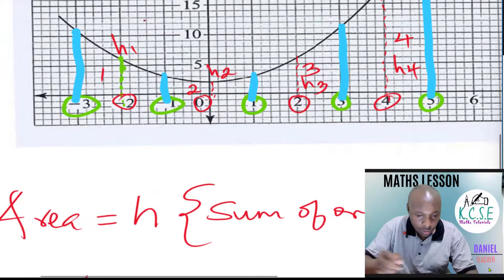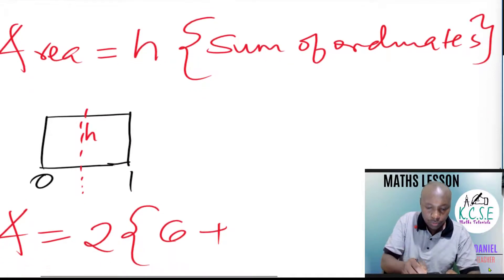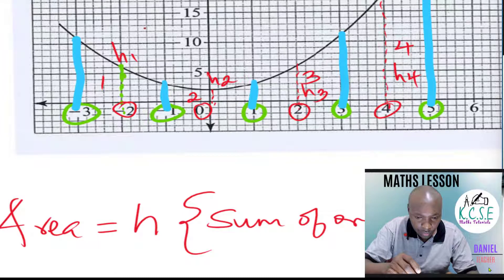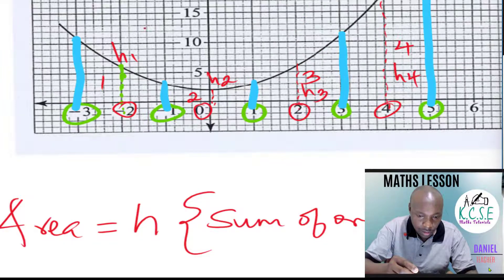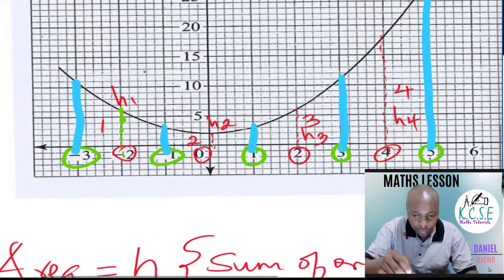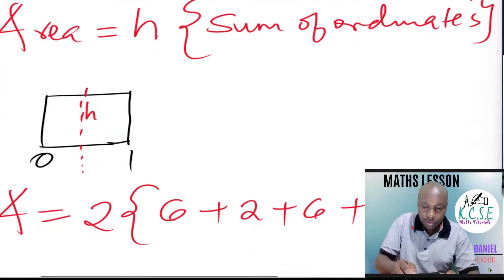At x equals zero, reading straight up to the curve gives a value of two. At x equals two, reading up to the curve gives six again. At x equals four, reading up to the curve gives eighteen. So our four ordinate values are six, two, six, and eighteen.